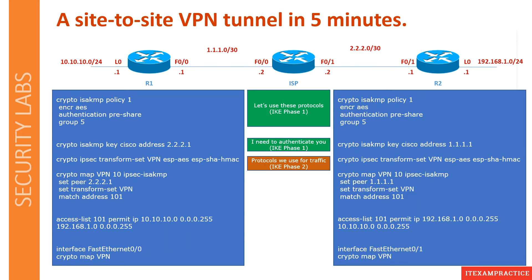IKE Phase 2 covers everything — files and all traffic — that we want to send from R1 to R2. Here I am going to use AES and SHA. I assume that you know what AES and SHA are; if not, I will try and record an additional lecture.